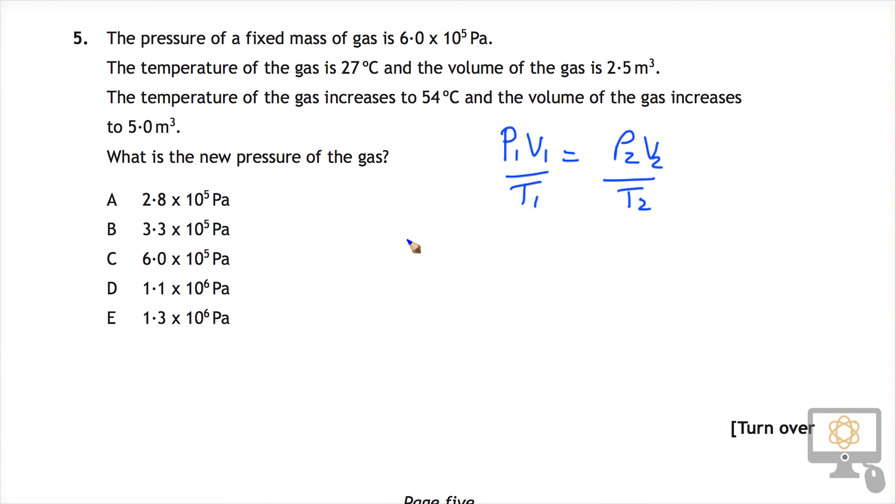Let's plug in the numbers. The initial pressure of the gas is 6×10⁵, so that's 6×10⁵ times the initial volume, which is 2.5, over the initial temperature.